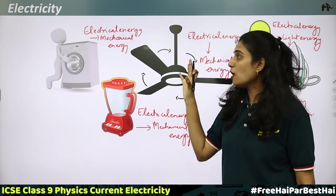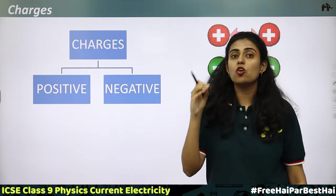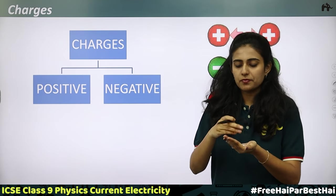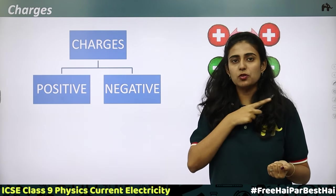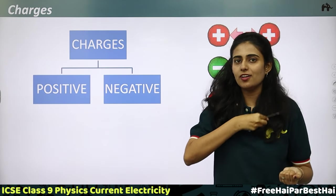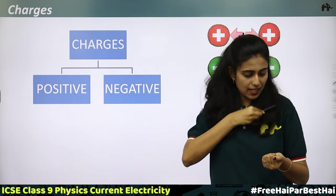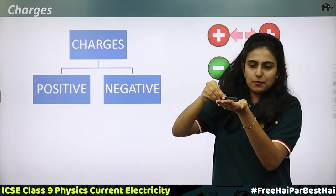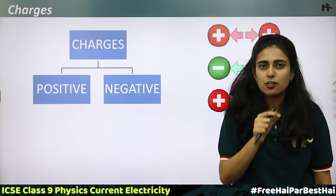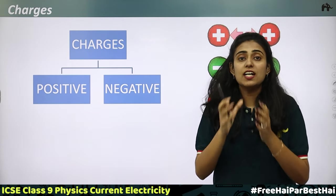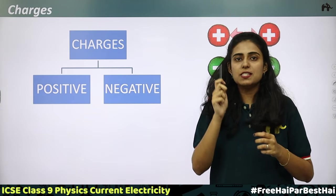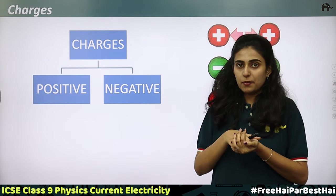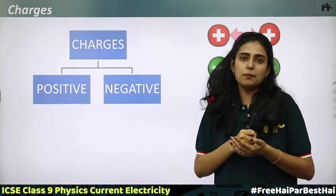Before discussing electricity in detail, we need to first understand what charges are. Here I have some pieces of paper and a pen. I am going to rub this pen on my dry hair. Then I will bring this pen near tiny bits of paper. What happens is the paper pieces will cling on to the pen. When I rub this pen on my dry hair, the pen is getting charged. This charged pen is brought near the tiny pieces of paper, and that is why the charged object is attracting the pieces of paper.